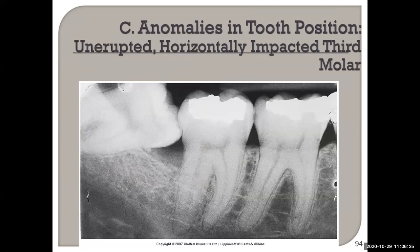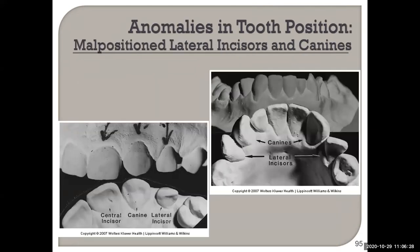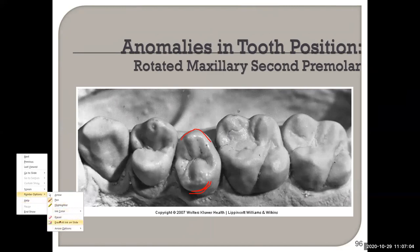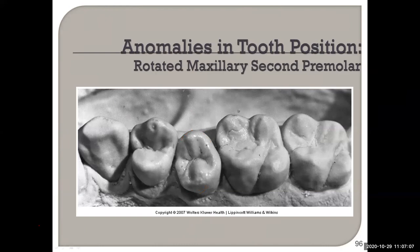Anomalies in position: teeth can be switched around. The problem is documenting this on a computer chart — it's much easier with a paper chart. This is a completely rotated second premolar — the buccal surface is on the lingual side. When you see mouth after mouth after mouth, a rotation like this is going to stick out to you.